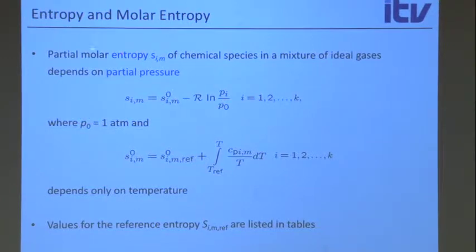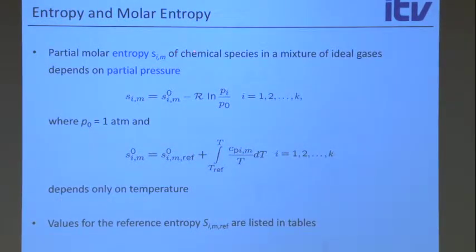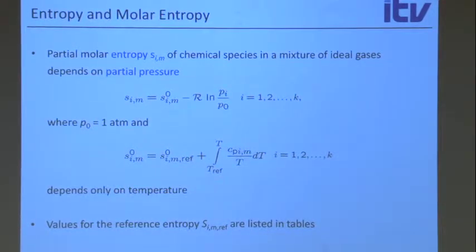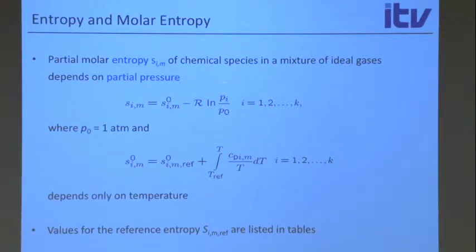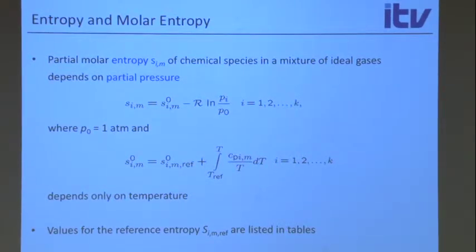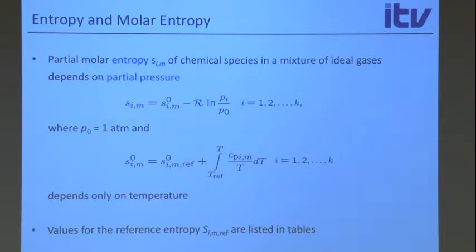Let's see how equilibrium is defined. We first introduce the partial molar entropy, which we did before. The entropy is a function of temperature and pressure. So we say the partial molar entropy has a part that only depends on temperature and then a second part that has the pressure influence. This is very similar to what we had for the enthalpy — there's a reference term plus a temperature dependent term, and then we have a pressure dependent term. These reference values we find in a table, and we have three different contributions to the entropy.